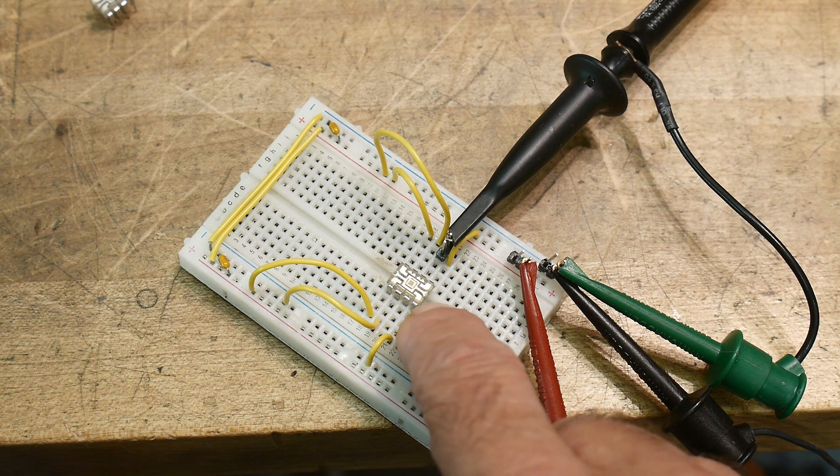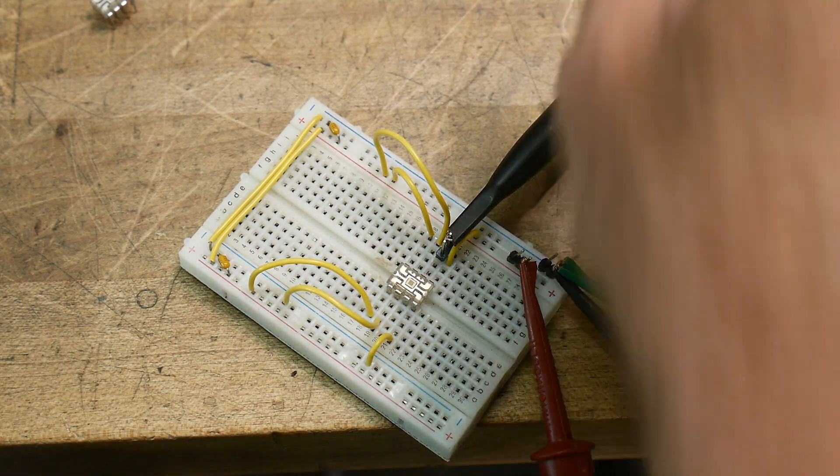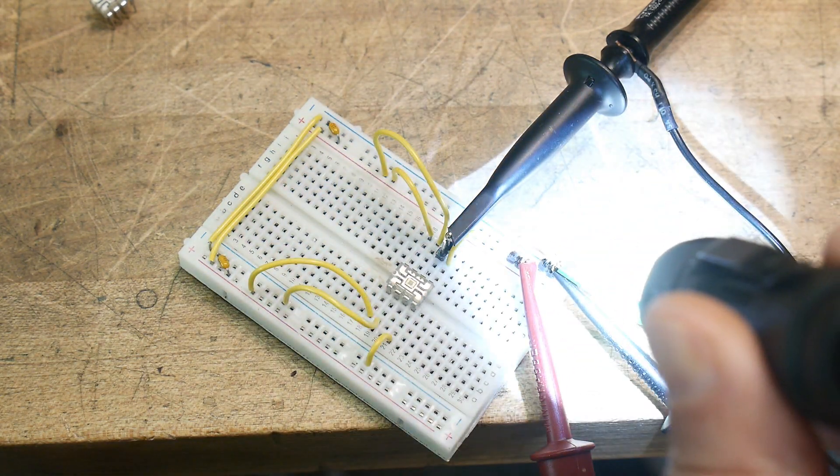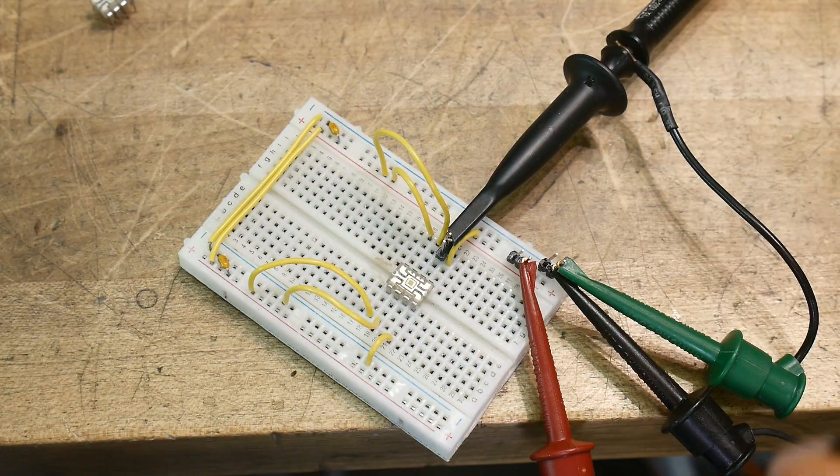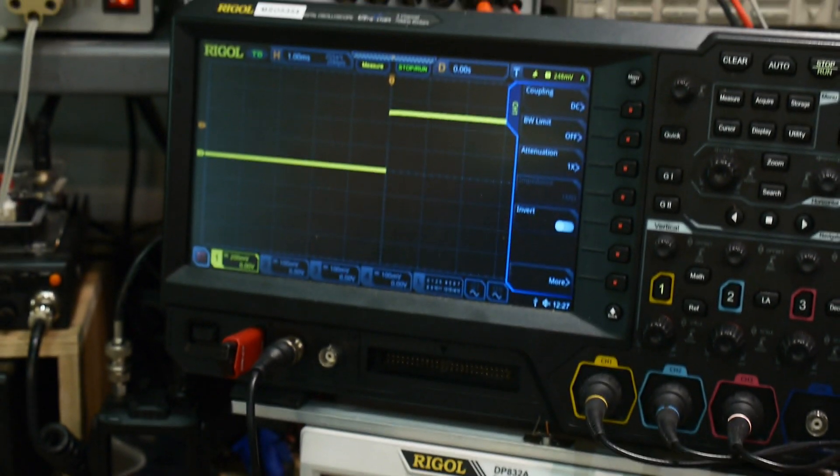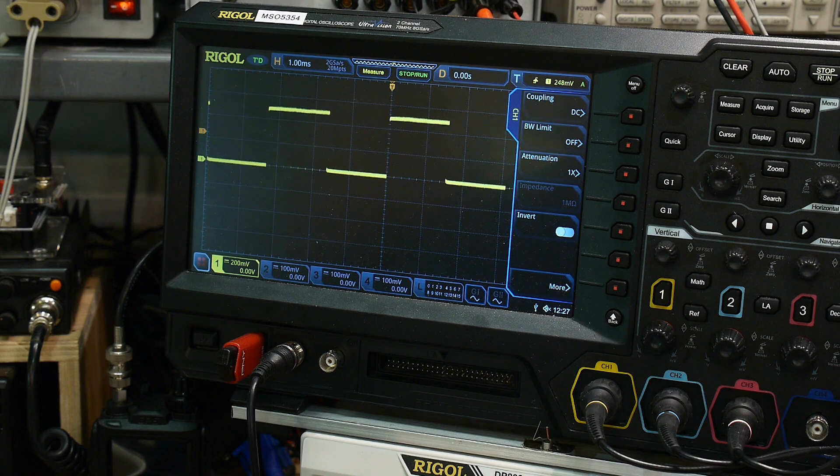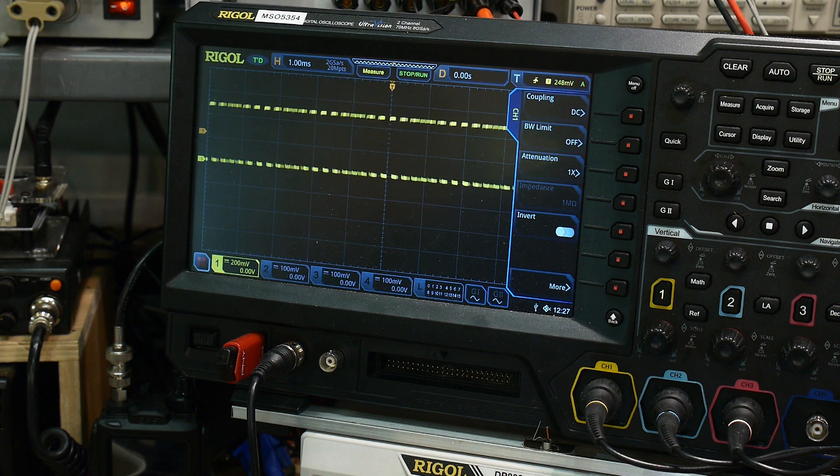All right, super simple, just a chip and some wires. And what I'm going to do is I'm going to shine light on it, okay? And we will take a look at the oscilloscope. And here's the output and as I shine light on it we get higher and higher frequencies.